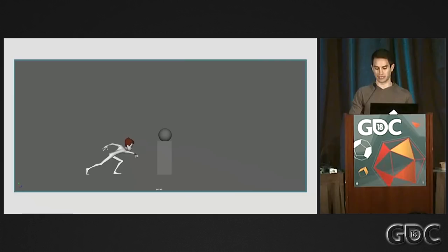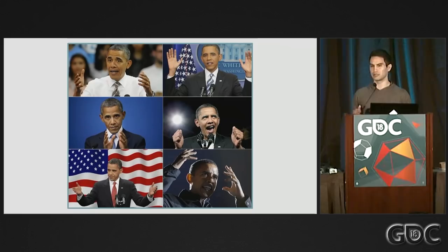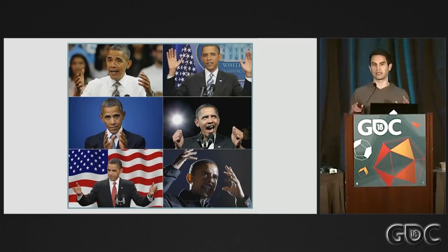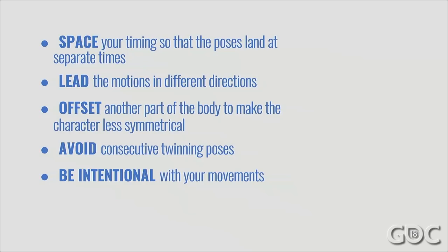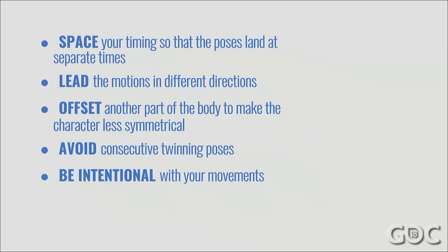Four: twinning the correct way. I'm talking about when two objects move in parallel at the same time. Animators new or old have probably heard that twinning is bad. However, it isn't — as long as you do it correctly. If you're twinning, just make sure you're breaking up the animation to account for it. Space your timing so that the poses land at separate times, lead the motions into different directions, offset one part of the body to make the character less symmetrical, avoid consecutive twinning poses throughout the shot, and be intentional with your movements. Many successful games, animations, and movies have done this successfully.